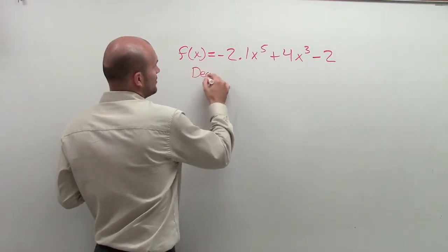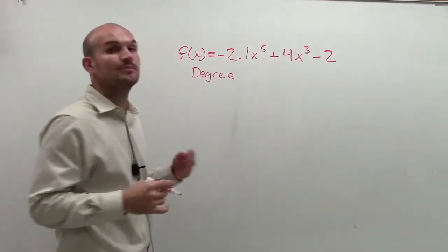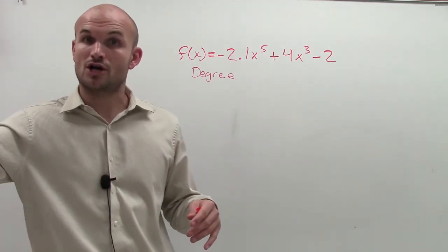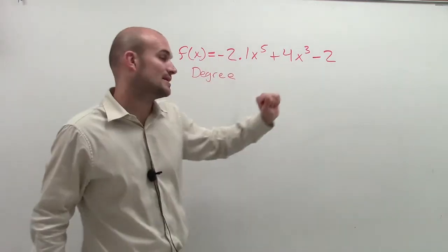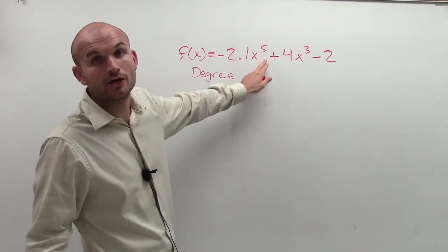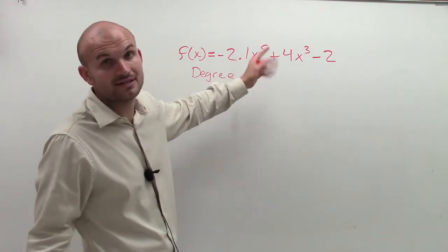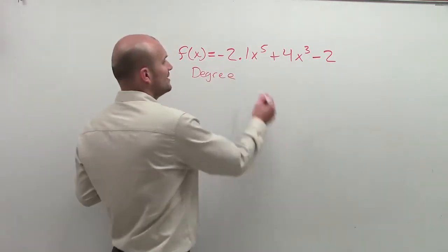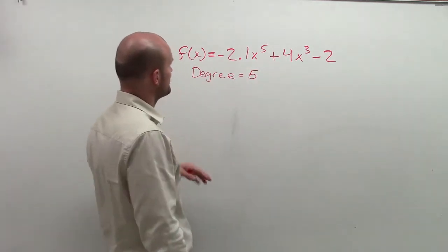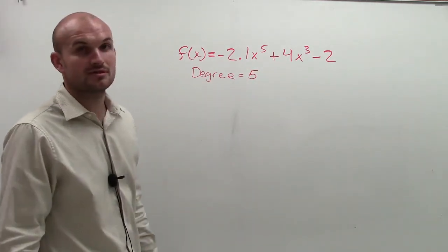So the degree, remember, is your largest exponent when your polynomial is in descending order. That means the highest exponent goes first for your variable, and then we go in descending order. So the degree of this polynomial is to the fifth degree, as five is our degree of our polynomial because it's the highest exponent of our variables. So you can say degree equals five.